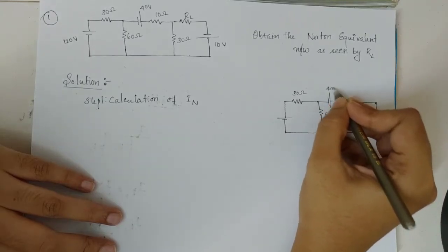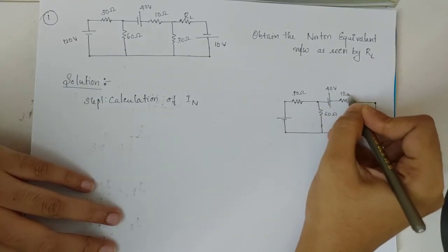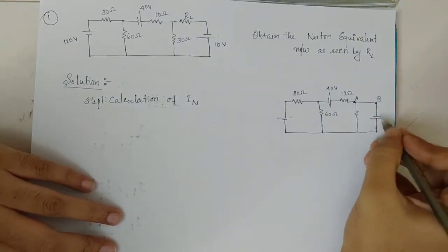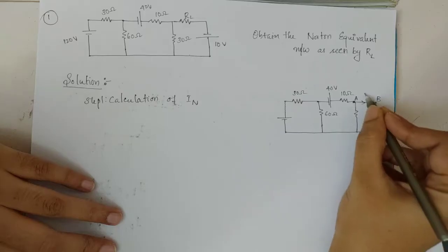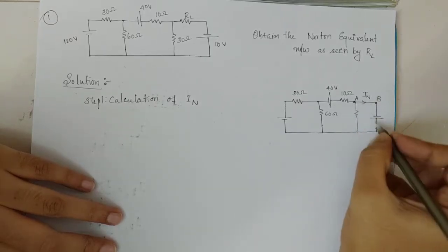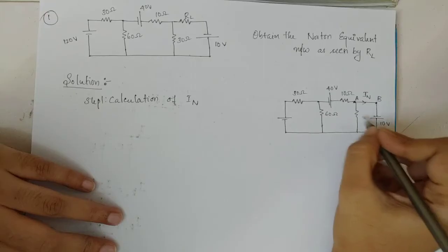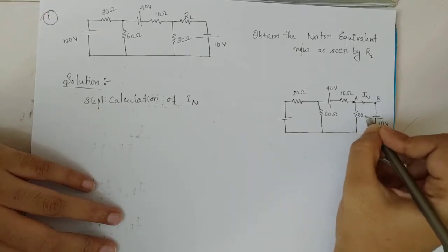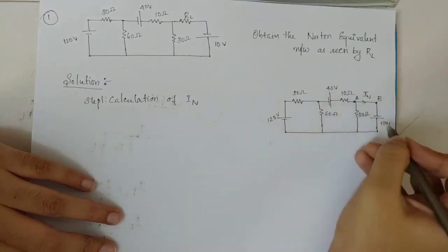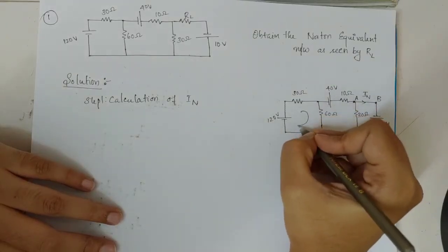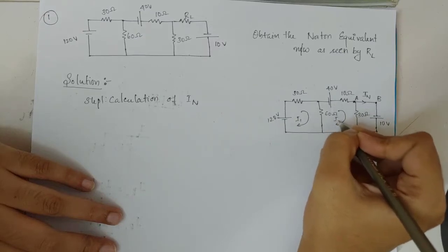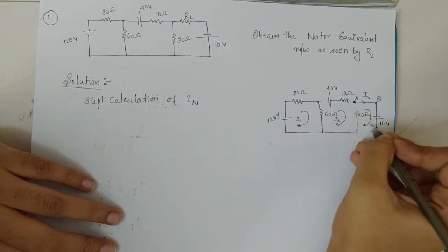This circuit has 40V source, 10 ohm resistor, nodes A and B where we are shorting, a 10V source, a 30 ohm resistor, and a 120V source. The mesh currents are I1, I2, and I3.